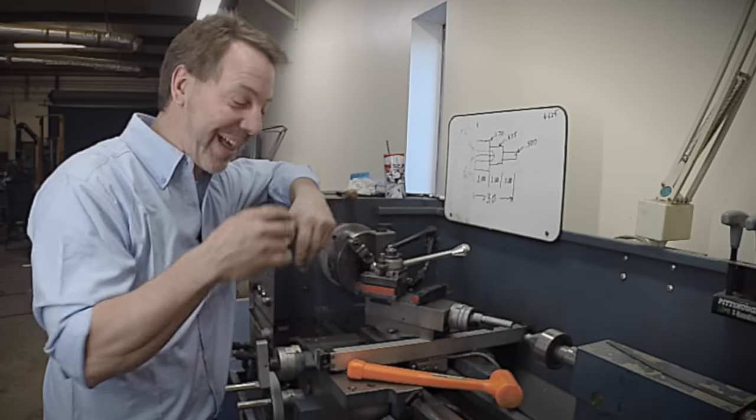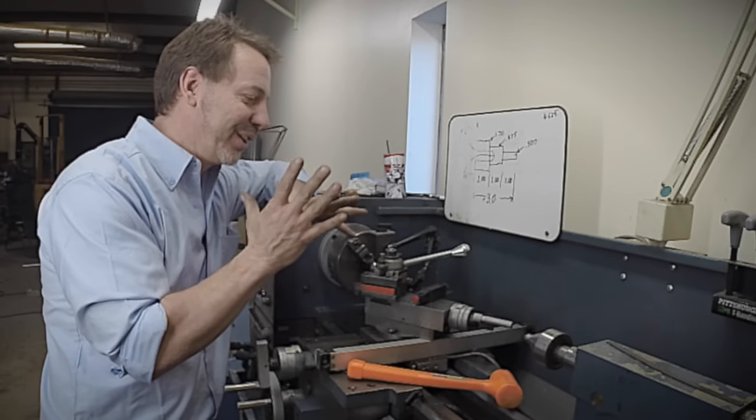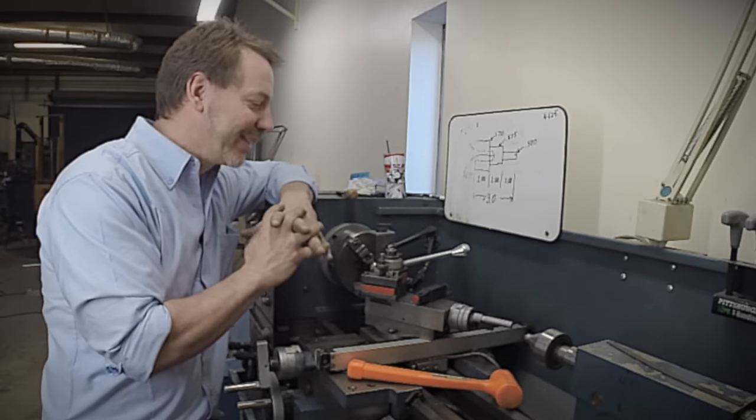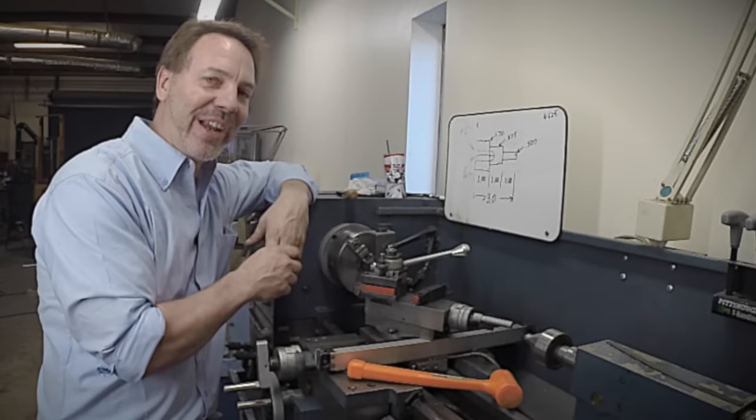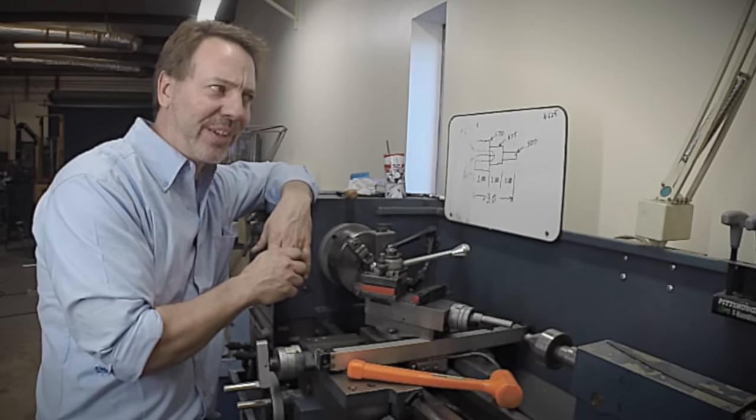There you go. It's that simple. Tighten it down, double check it, and you've got your compound rest set up at a 30 degree angle for a 60 degree included angle in a matter of minutes, or less than a minute actually.